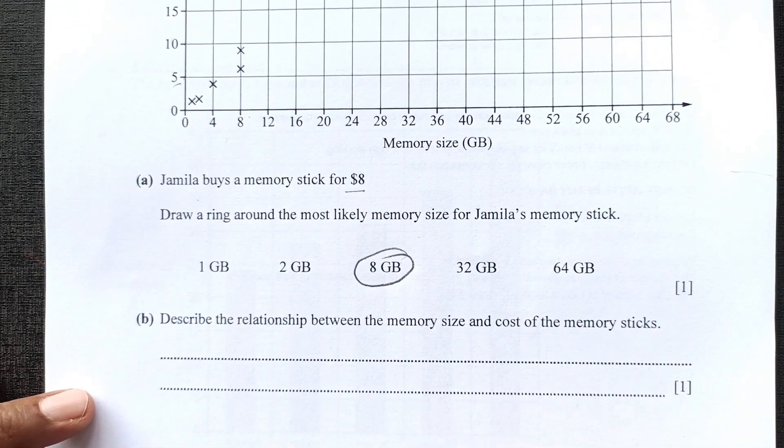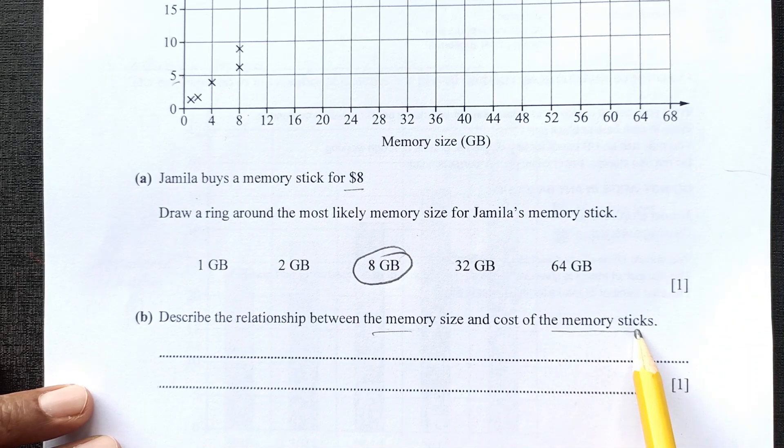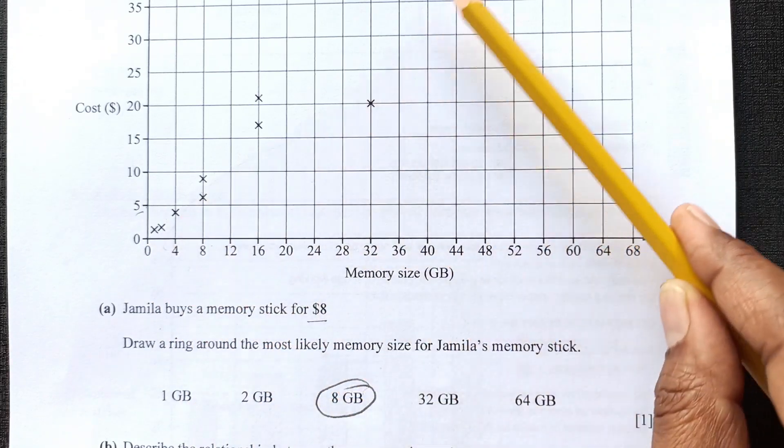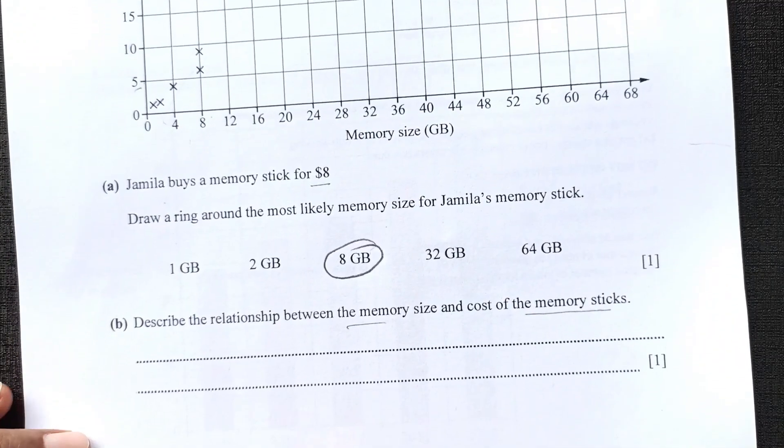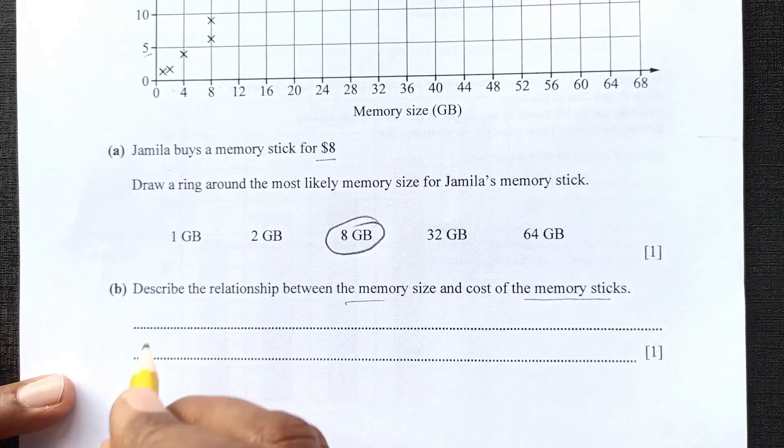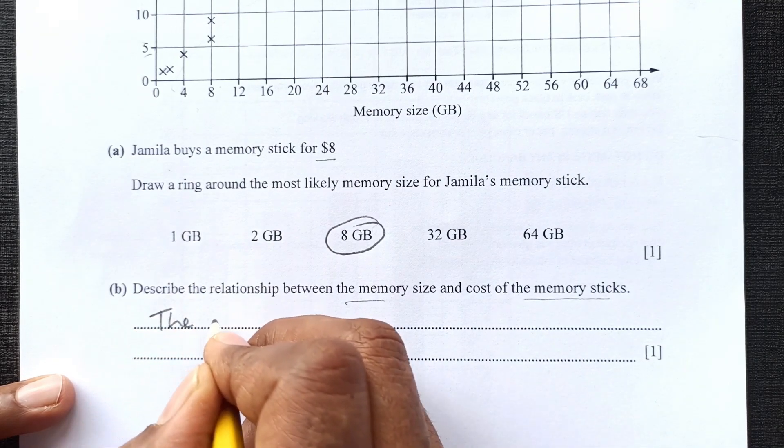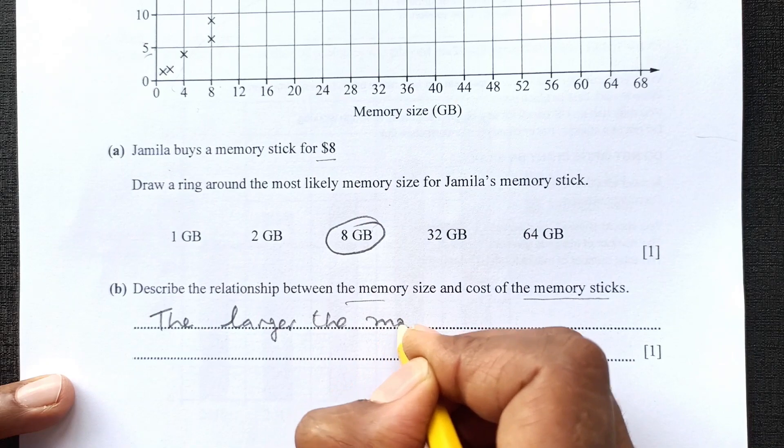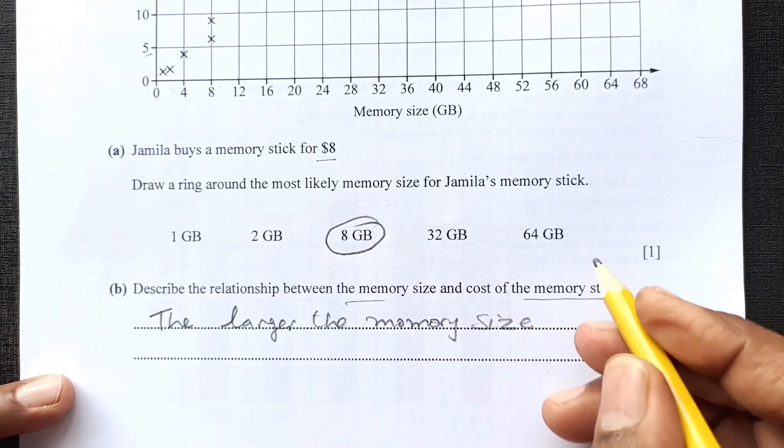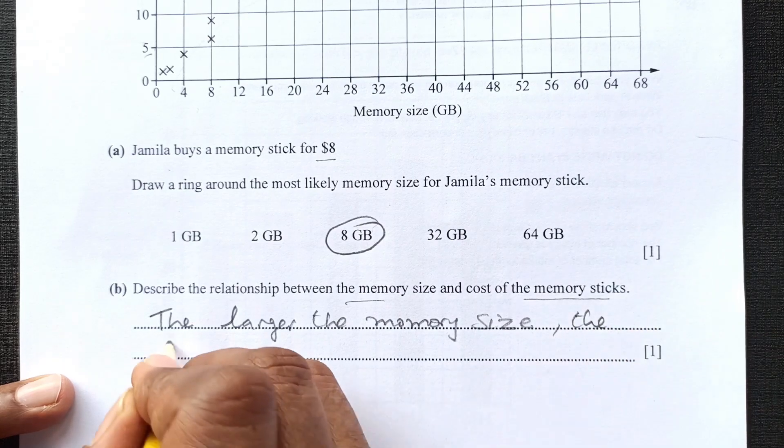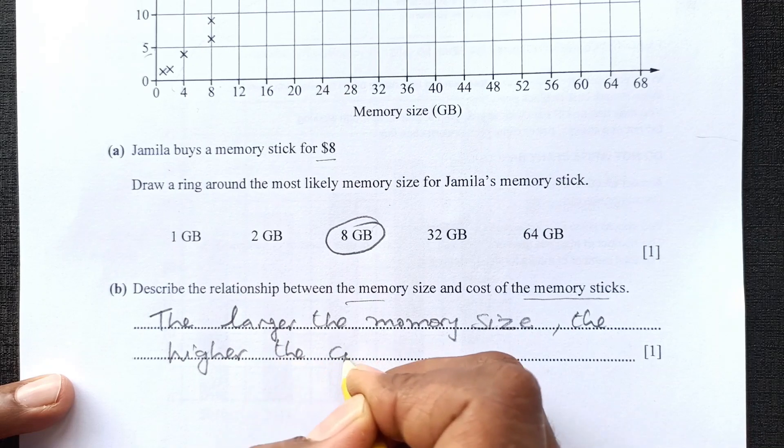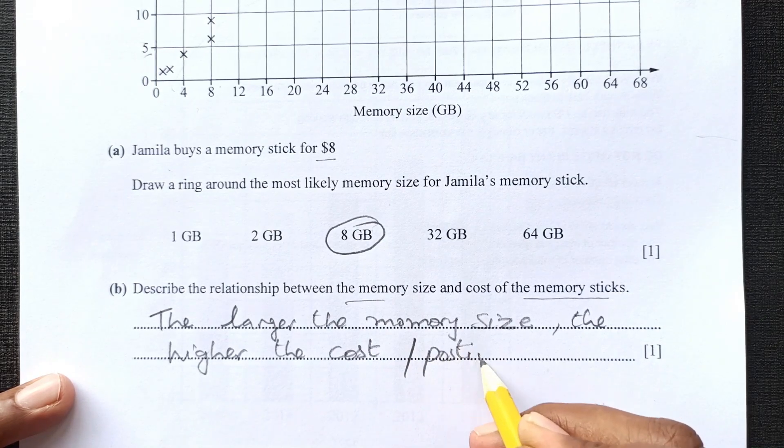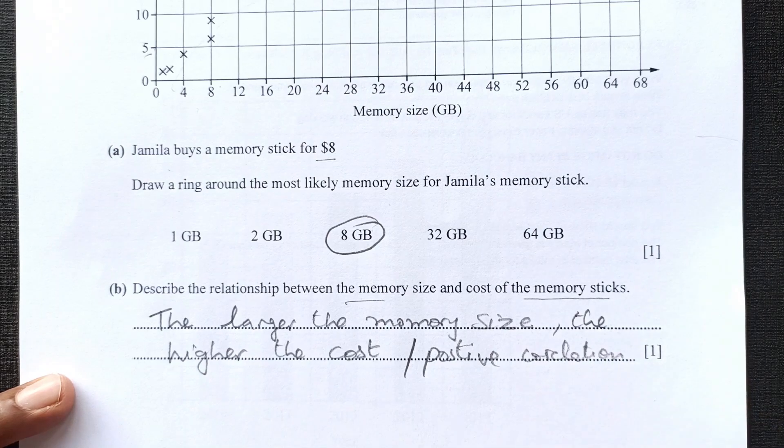Now, describe the relationship between the memory size and the cost of memory sticks. If we see the relationship here, as the memory size is increasing, the cost is also increasing. So we can say it is a positive correlation. We can say positive correlation or we can say the larger the memory size, the higher the cost. You can directly even write down that it is a positive correlation. That will also say the same thing.